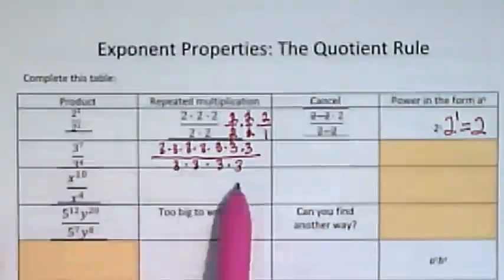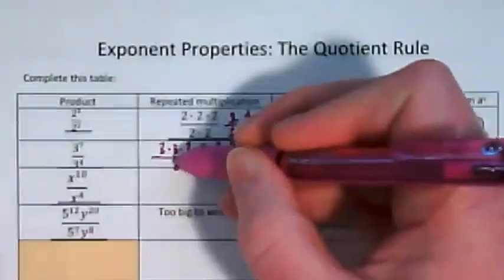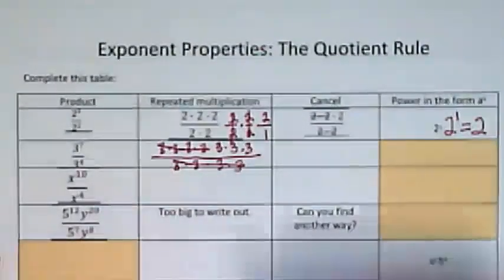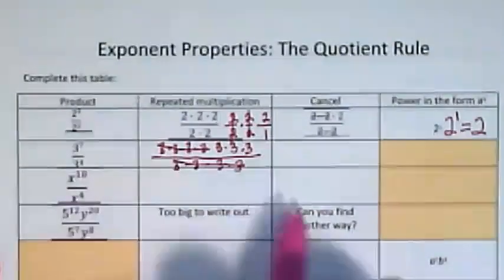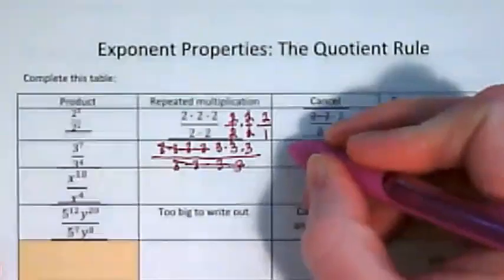There's 4 down here and 7 up here. So I can take away 4 of them from both. That's where the subtraction comes in. Instead of showing cancel here, because I actually just canceled it and I don't want to write all those 3's again, this is what's really happening with the quotient rule.